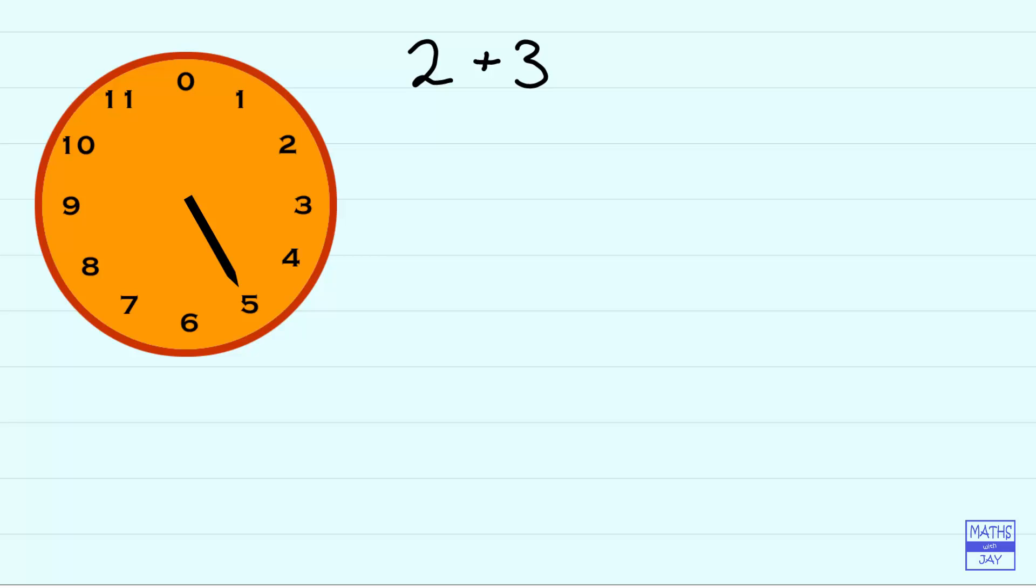Now what we do in Modular Arithmetic is we don't use the equal symbol but we use the congruent symbol. So here I'm writing that 2 plus 3 is congruent to 5.